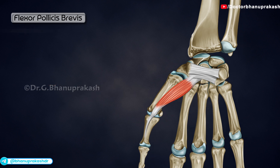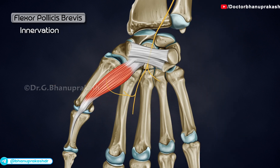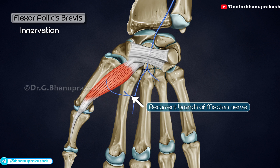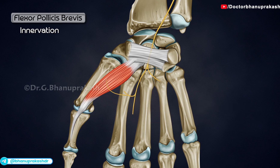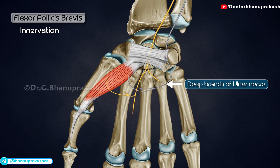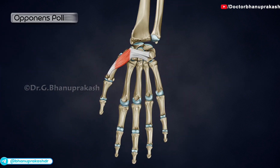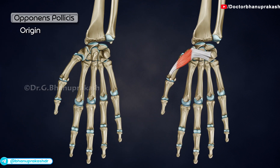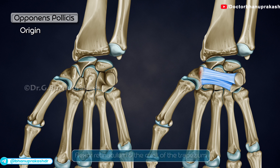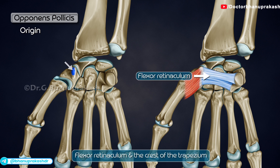The superficial head is innervated by the recurrent branch of the median nerve, and the deep head is innervated by the deep branch of the ulnar nerve. Opponens pollicis originates at the flexor retinaculum and the crest of the trapezium.